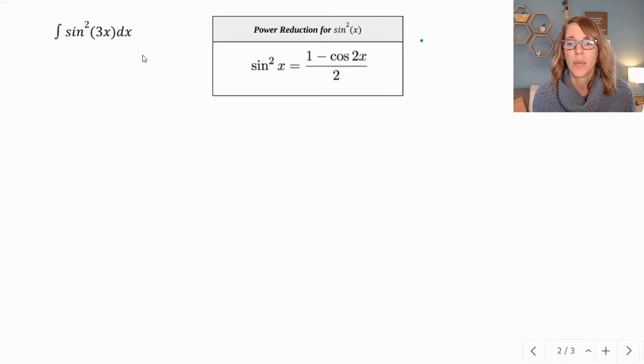I've got sine squared. I'm going to use the formula that I see right here. I'm going to be careful though because my argument is a 3x. In this formula we are doubling that angle.